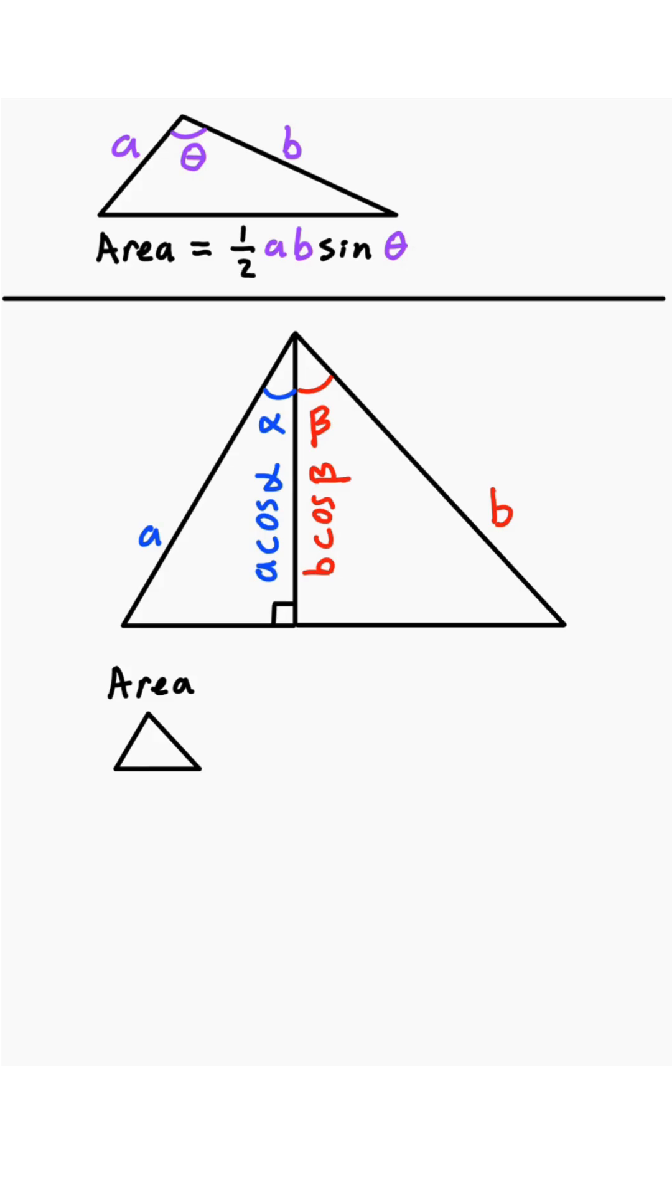Now, let's talk about the area. The area of this entire triangle is going to be made up of the sum of the areas of the two smaller triangles.